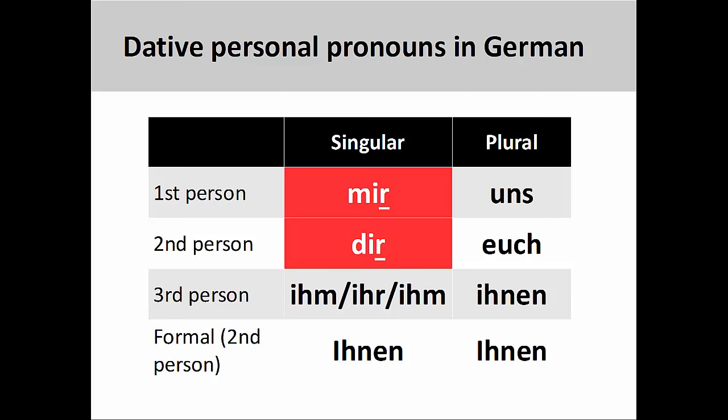The dative first-person and second-person singular forms are mir and dir. You will notice that the first part of these pronouns resemble the accusative forms, but that the dative forms both end in -r. This ending always helps in identifying these pronouns as being dative.